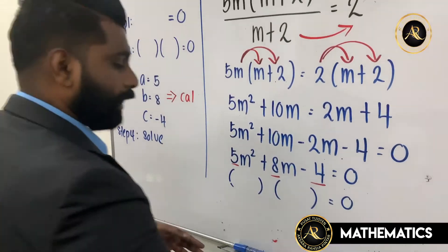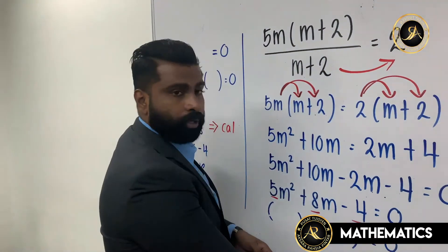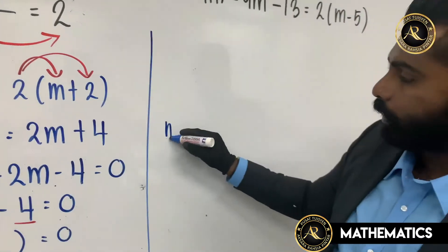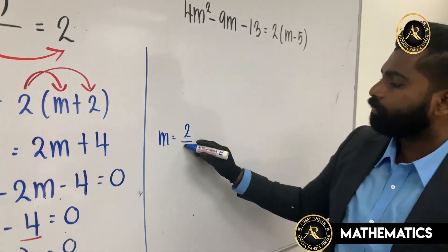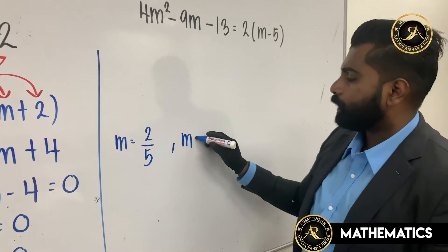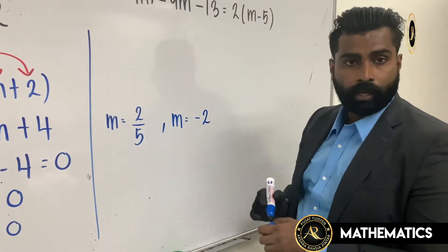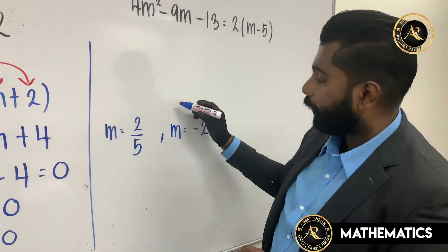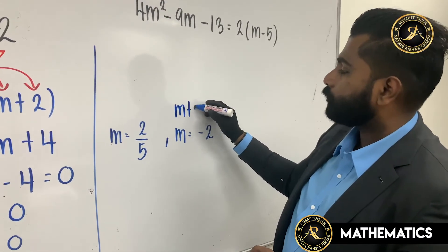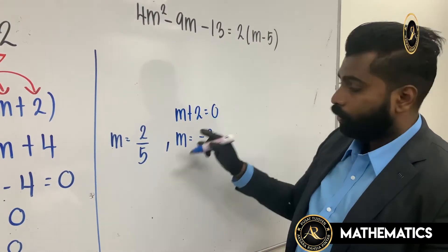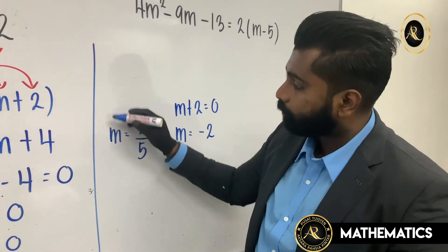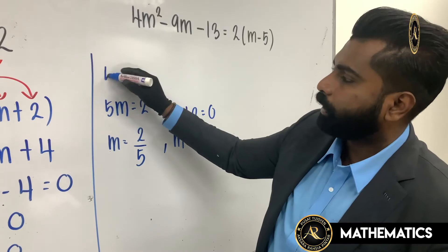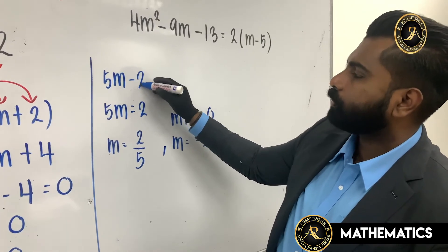So my m values are 2/5 and negative 2. Now, when we throw the negatives to the other side: m + 2 = 0 gives negative 2, and for 2/5 — I times to get 5m = 2, so 5m minus 2 equals to zero.